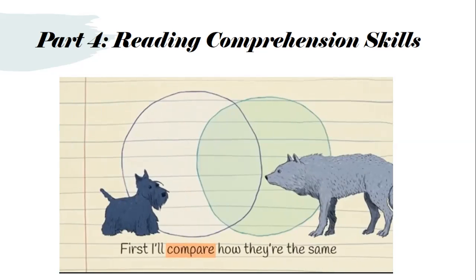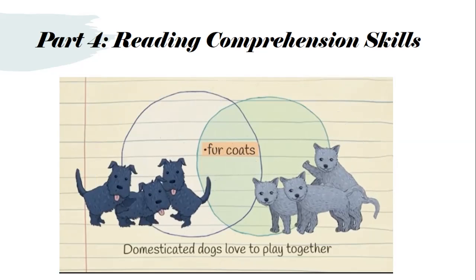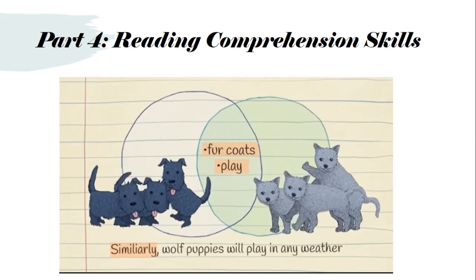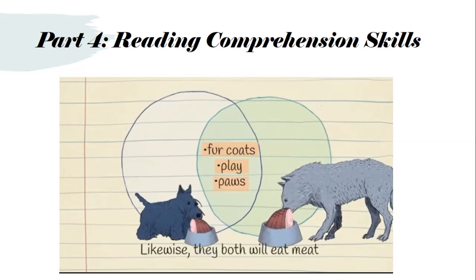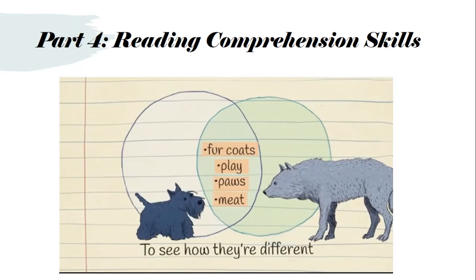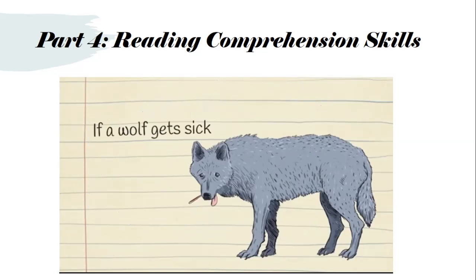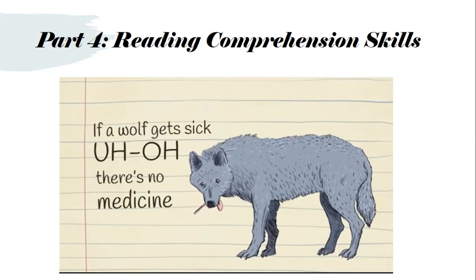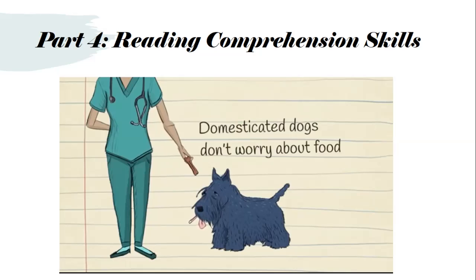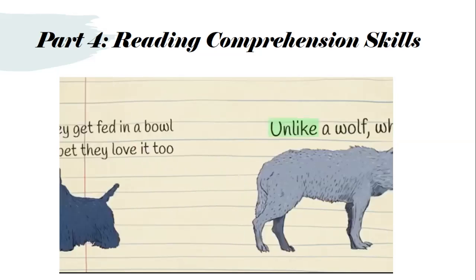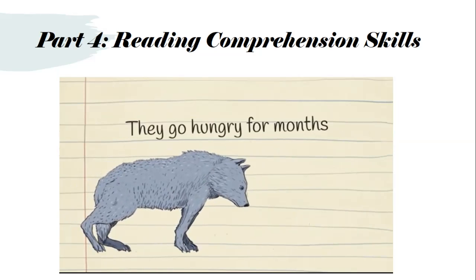First, I'll compare how they're the same. Both have fur coats for the wind, snow and rain. Domesticated dogs love to play together — similarly, both puppies will play in any weather. Pet dogs have calls, wolves do as well. Likewise, they both will eat meat. To see how they're different, let's contrast. Most wolves have longer teeth — and that's a fact. If a wolf gets sick, there's no medicine; in contrast, let's go to the vet. Domesticated dogs don't worry about food — they get fed. Unlike a wolf, which has to hunt, and if it can't find much food, they go hungry for months.